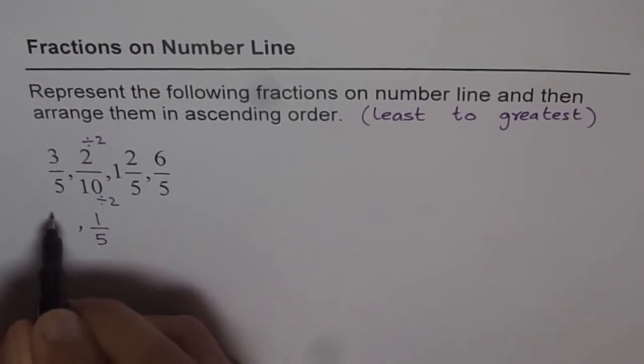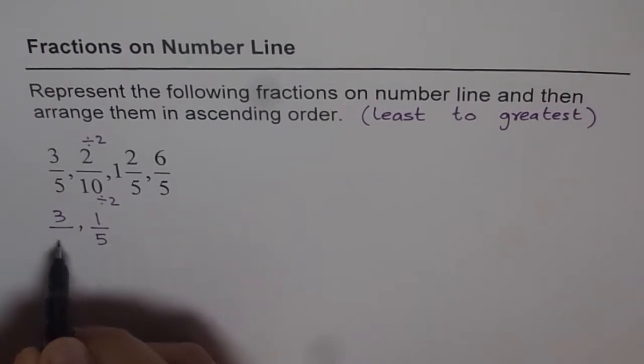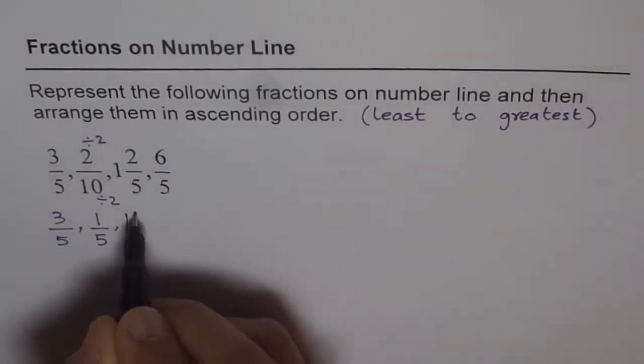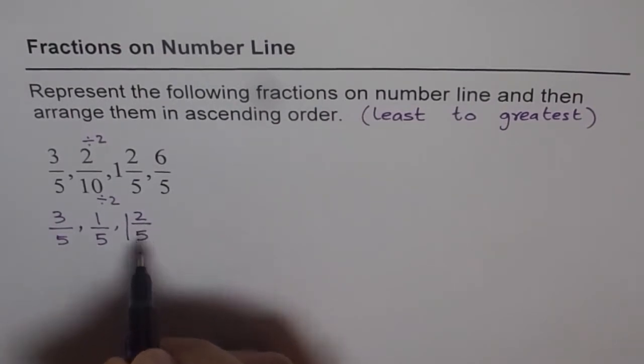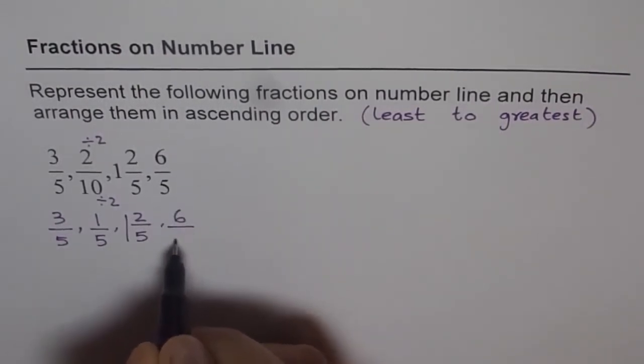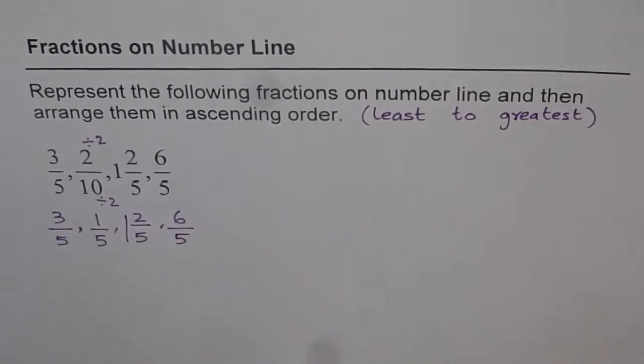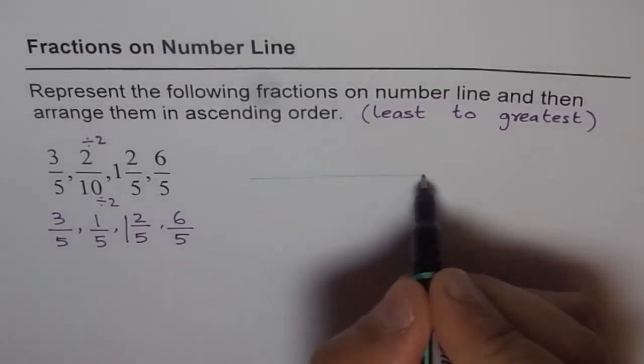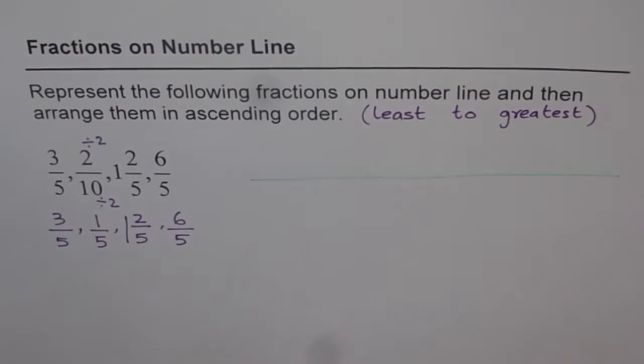So let me rewrite all the fractions once again. So it is 3 over 5, 1 over 5, 1 whole 2 over 5, and 6 over 5. So these are the fractions given to us. Now we have to represent them on a number line. So let's draw a number line. It is a straight line like this. That is our number line.